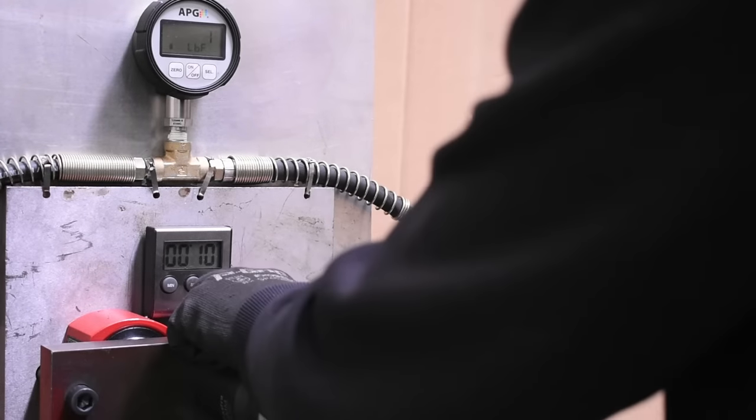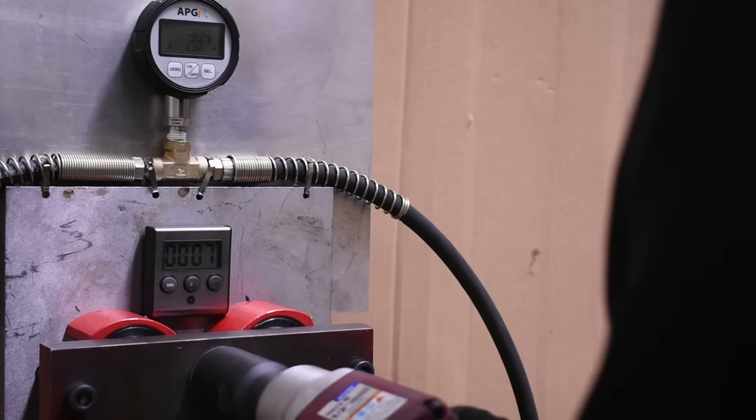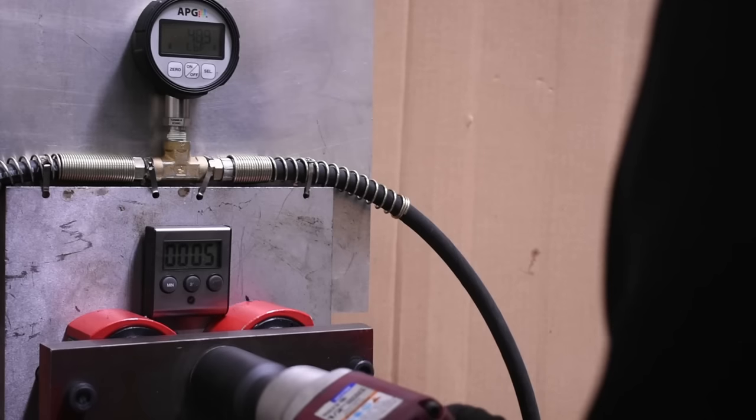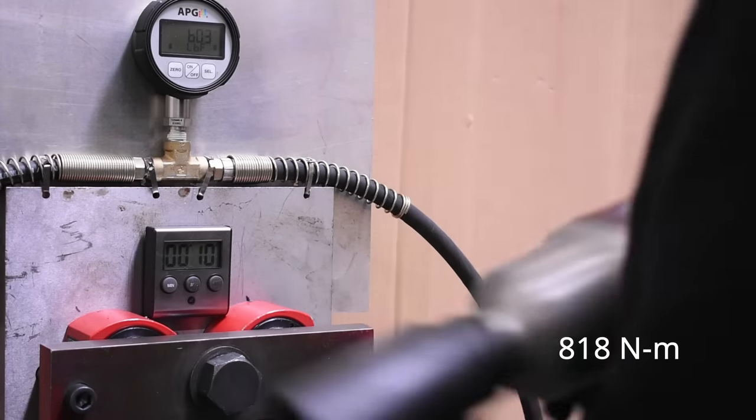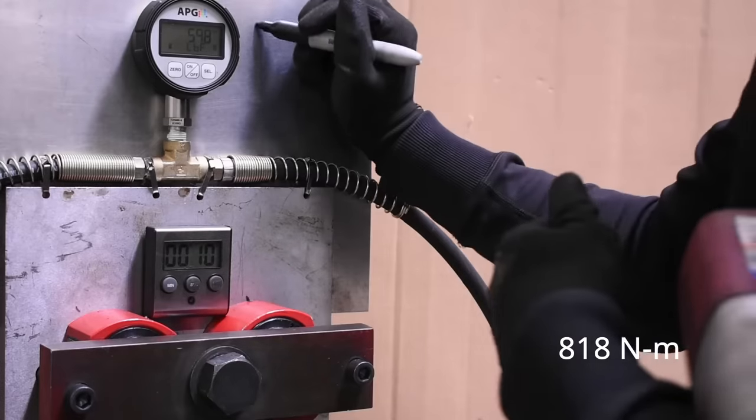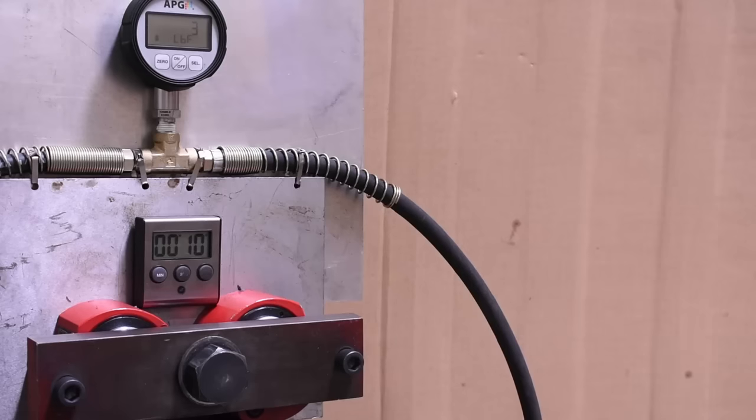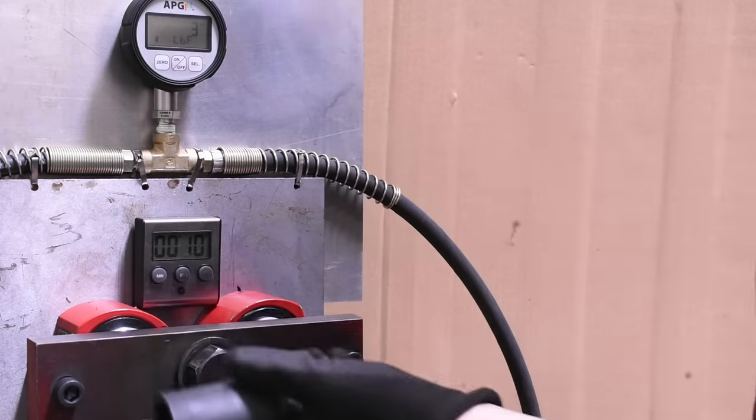Let's get into it. This baseline test is from the same socket testing video earlier this week, so it has the same baseline, six hundred three foot-pounds. For all these upcoming universal tests, they will be held at a similar angle, roughly eleven to fifteen degrees to match the wobble extensions we also tested. This is achieved by simply pointing the gun at a mark we made on the dyno. First, we'll do the Harbor Freight U-joint style, just because we think it's fun.